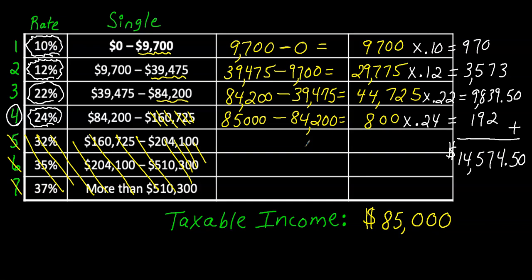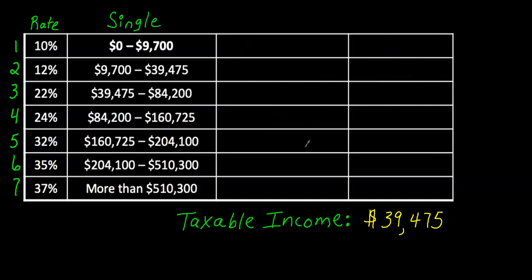I just, in the next two examples, I just want to go over some special cases that you might run into. So let's say your taxable income here was $39,475. This is a little weird because the $39,475, you have to figure out which tax bracket you're in.